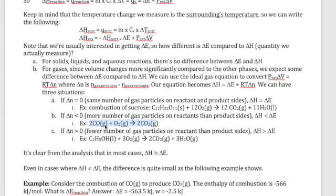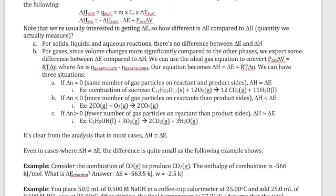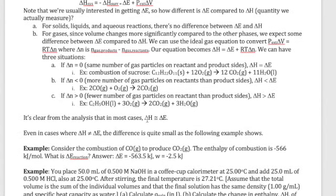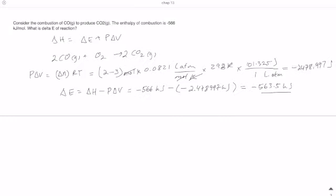In another reaction where you go from 3 moles of gas reactants to 2 moles of gas products, delta n is negative, meaning compression occurs — so delta H is less than delta E. In a third case where you have 3 moles of gas reactants and 5 moles of gas products, delta n is positive — delta H is greater than delta E. The key point is that in most situations delta H and delta E are the same.